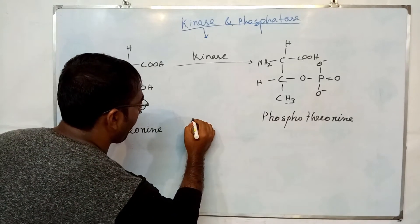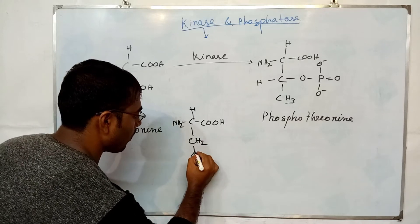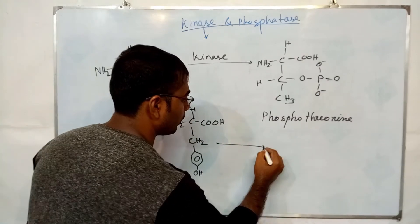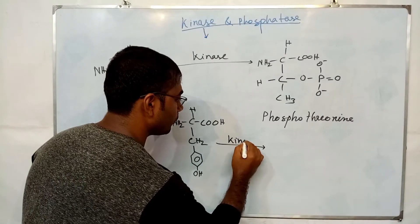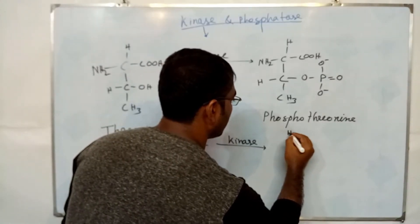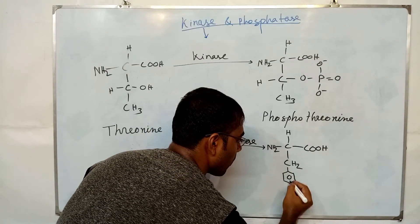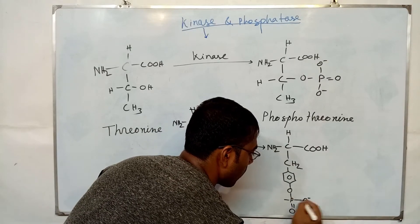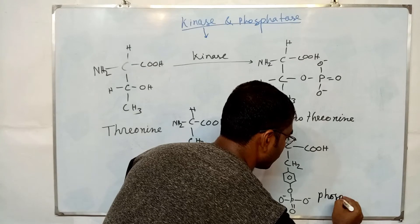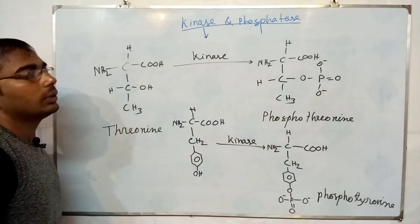Some kinase enzymes phosphorylate the tyrosine molecule. When the kinase acts on the tyrosine amino acid, the amino acid is changed into its phosphorylated form. This is the activity of kinase enzymes.